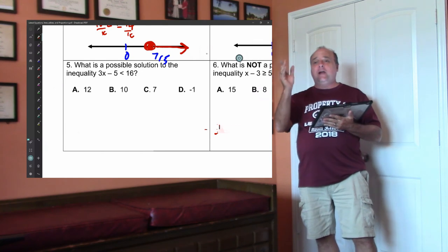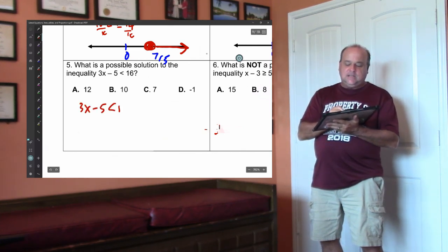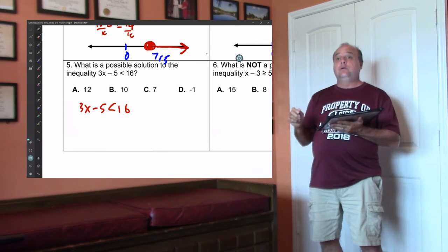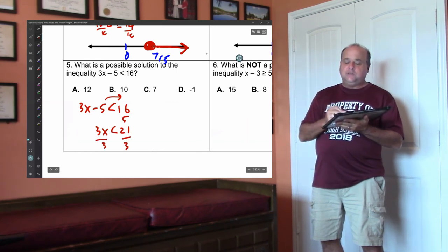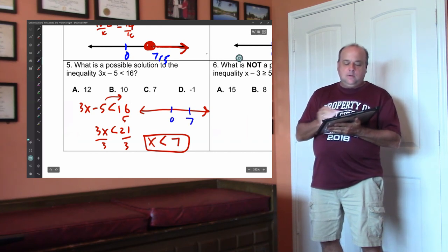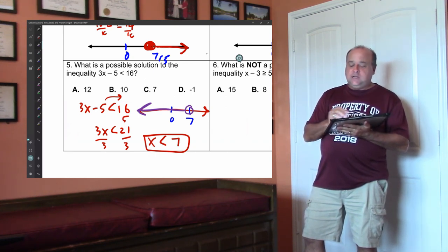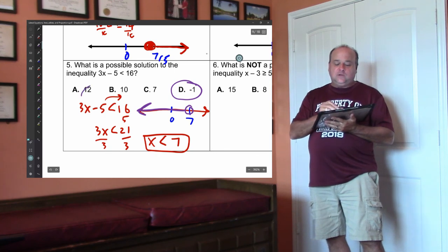On number five, we're going to graph it and figure out which values work. Write down 3x minus 5 less than 16. Add the 5 and divide by 3. Punch 16 plus 5 divided by 3 on your calculator. Move over the 5: 3x less than 21, then x less than 7. Draw the number line — put 0 and 7 on it. We need an open dot, so 7 won't work, and the arrow goes to the left. Any number in that arrow will work. Is 12 in it? 12's over here — won't work. Will 10 work? 10's over here — won't work. 7 won't work because the dot's open, and negative 1 works, so negative 1 would be in the answer set. Anything more than 7 will not work, which eliminates 12, 10, and 7.